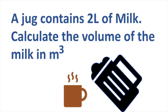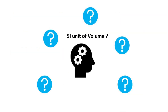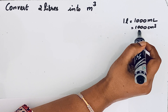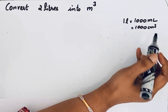We are here to analyze the given question. A jug contains two liters of milk. Convert this volume into meter cube. Liter is not the SI unit. One liter is equal to 1000 milliliter, which is equal to 1000 centimeter cube.